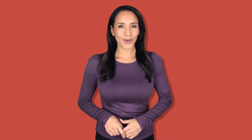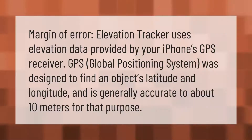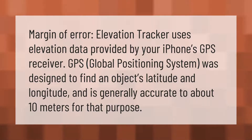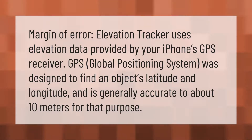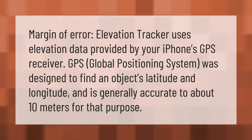Elevation Tracker uses elevation data provided by your iPhone's GPS receiver. GPS — Global Positioning System — was designed to find an object's latitude and longitude, and is generally accurate to about 10 meters for that purpose.